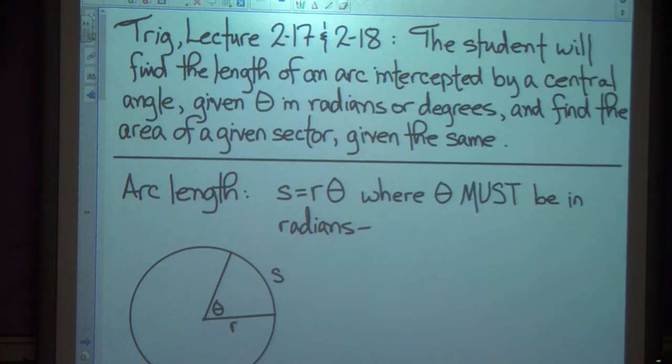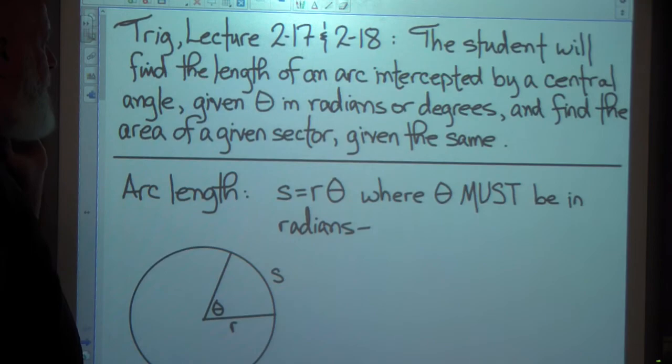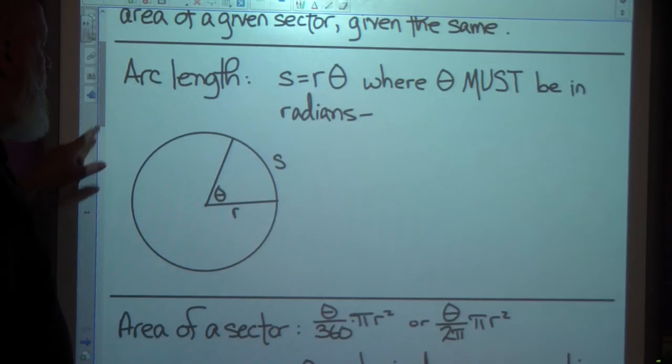All right, we've got trig lecture 217-218. Student will find the length of an arc intercepted by a central angle, given theta in radians or degrees, and find the area of a given sector given the same.